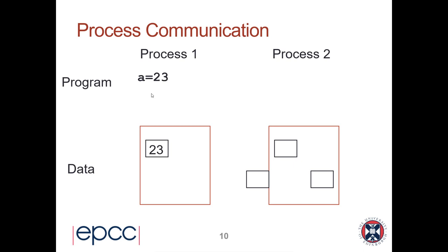The way I do that in the message passing model is I send a message. This is implemented as some kind of function call — here I just say there's a magic function called send, which sends the data A to process 2. We'll see what these are actually called in MPI later on.